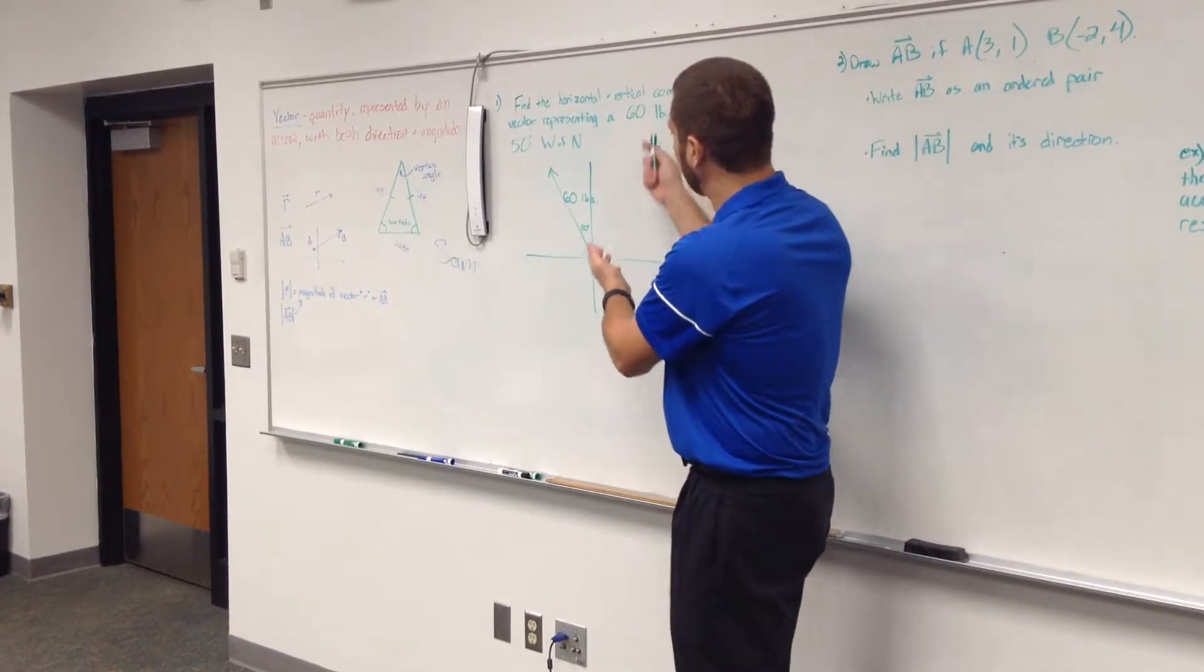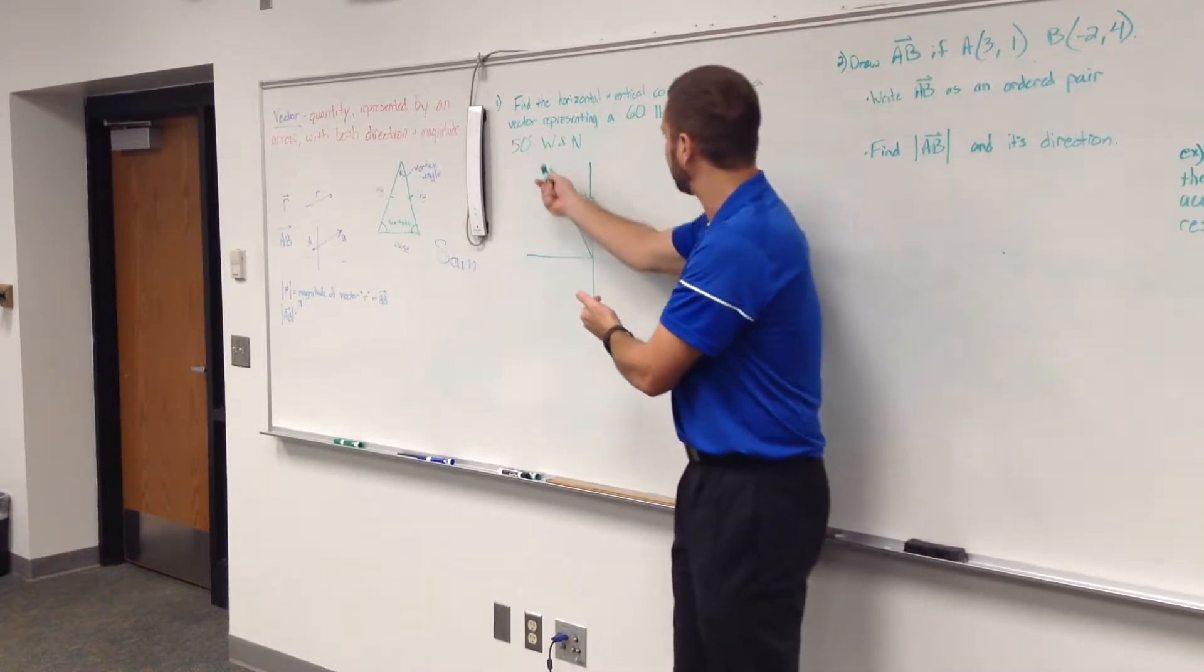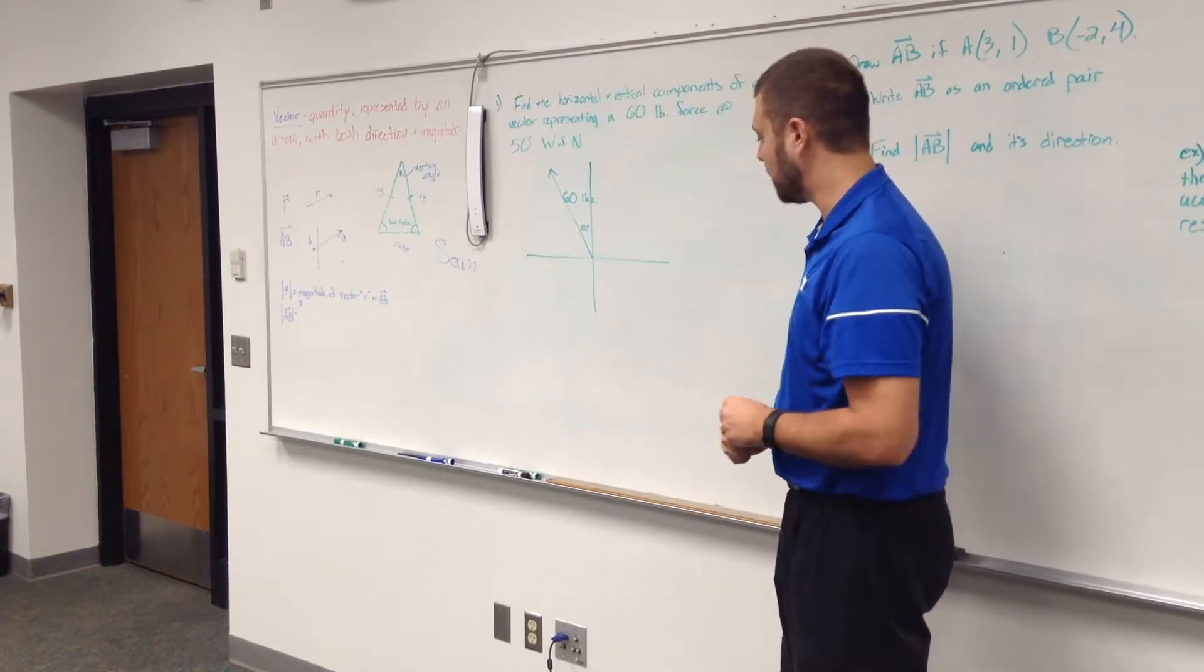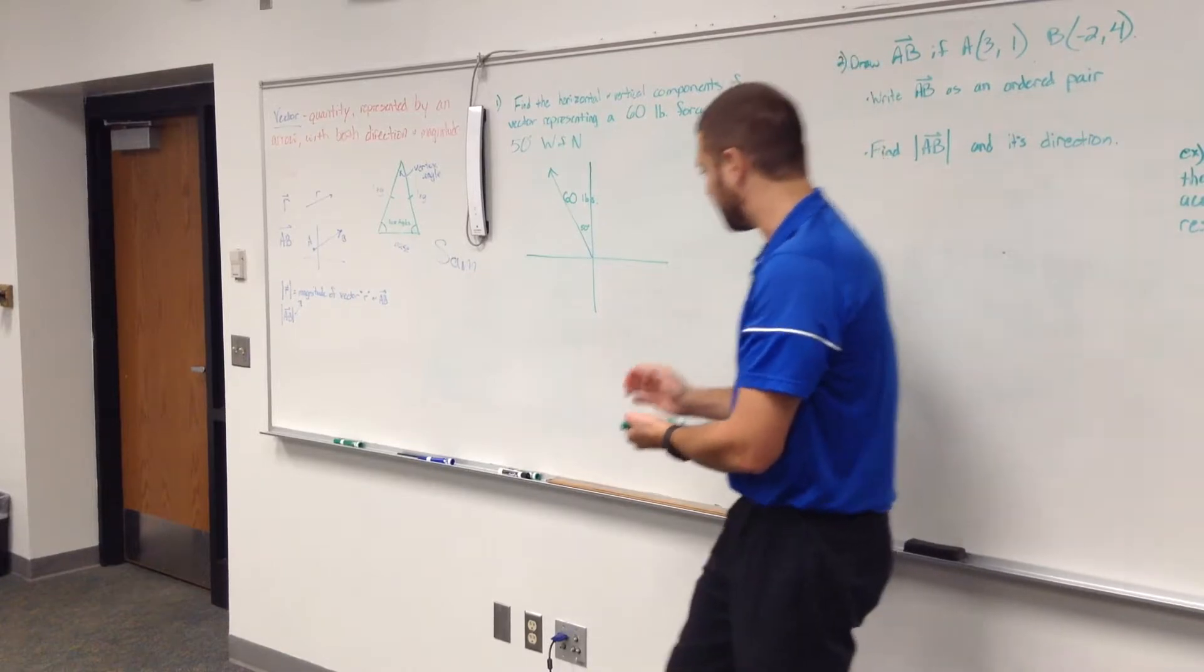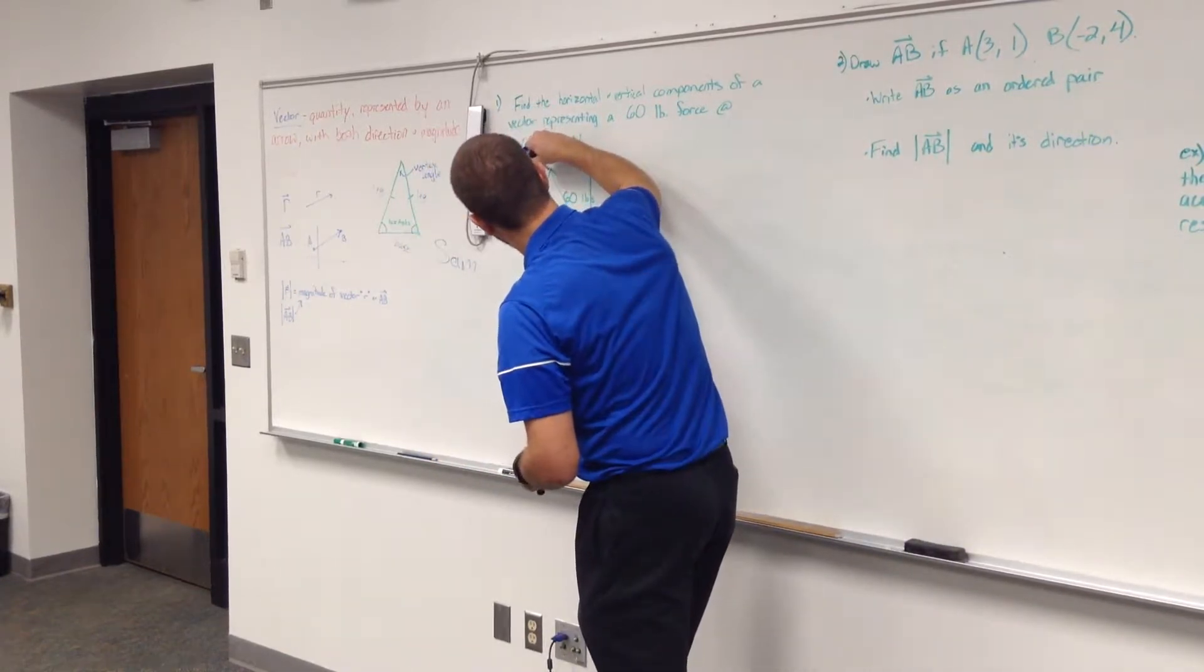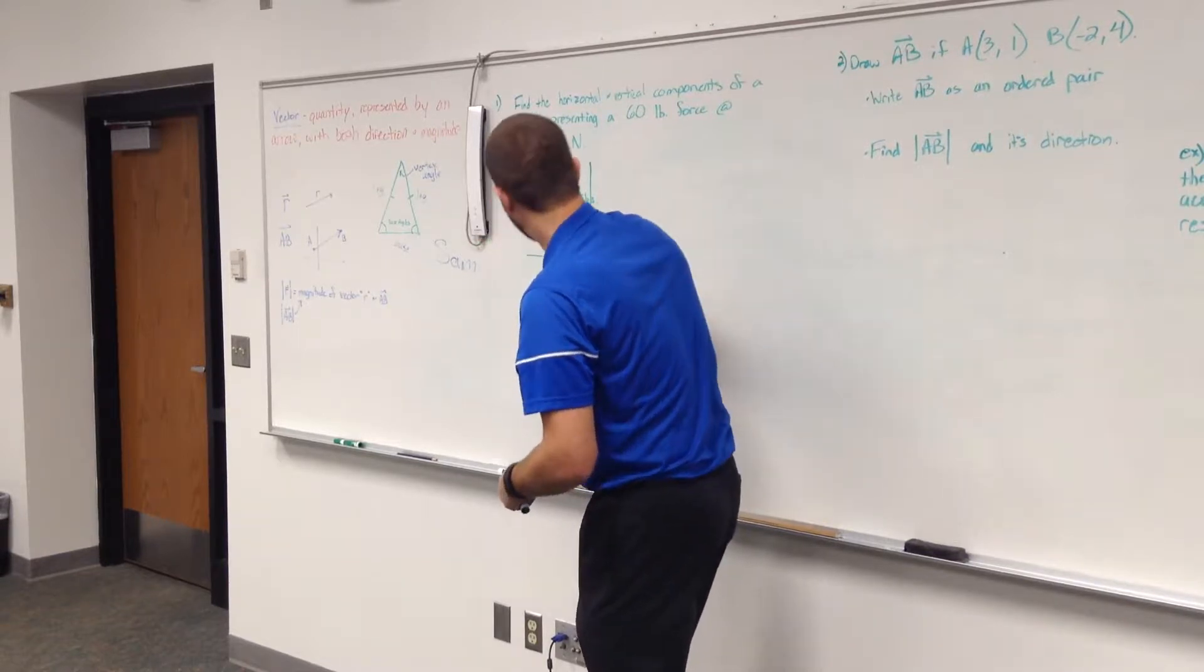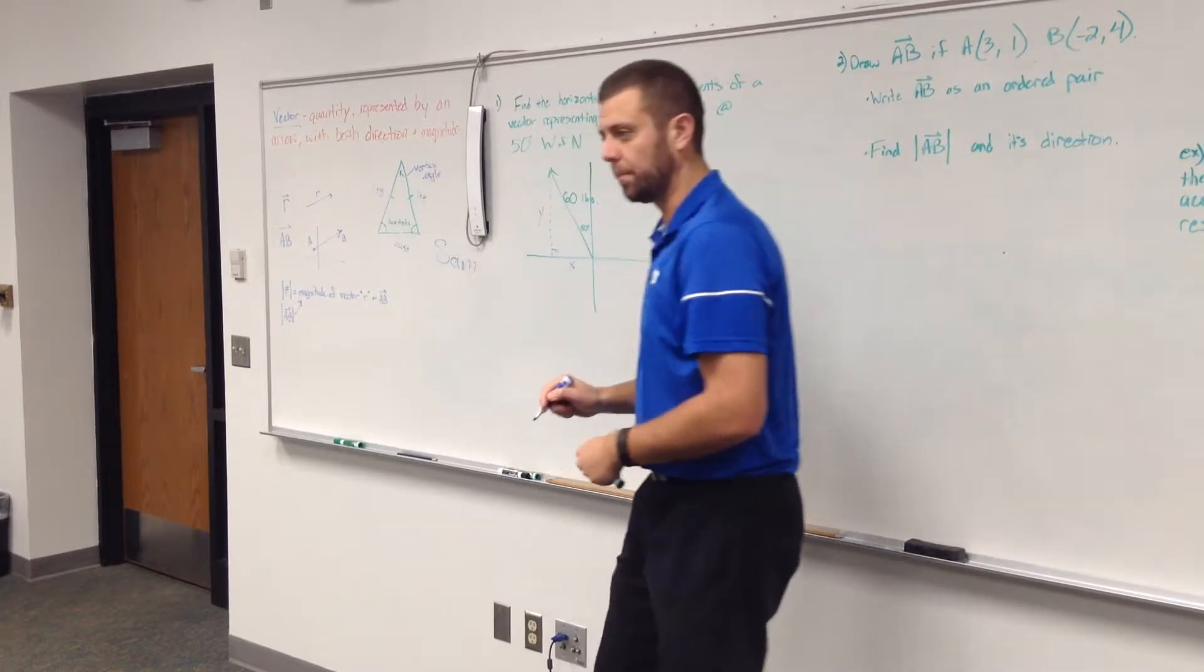So here it says we're going to find the horizontal and vertical components of this vector representing a 60 pound force 50 degrees west of north. So really, all I need to do to find my horizontal and vertical components would be to go ahead and make a right triangle and find my horizontal and my vertical components.